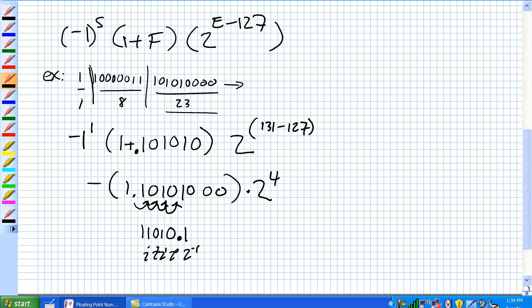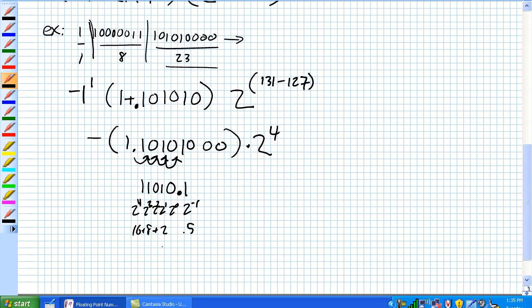1, 2 to the 3, 1 to the 4, so that's .5, a 2, an 8, and a 16. And just add those guys up, 26.5. And remember, negative 26.5.